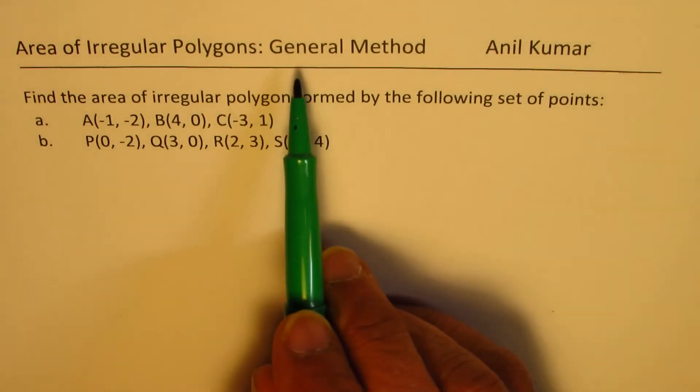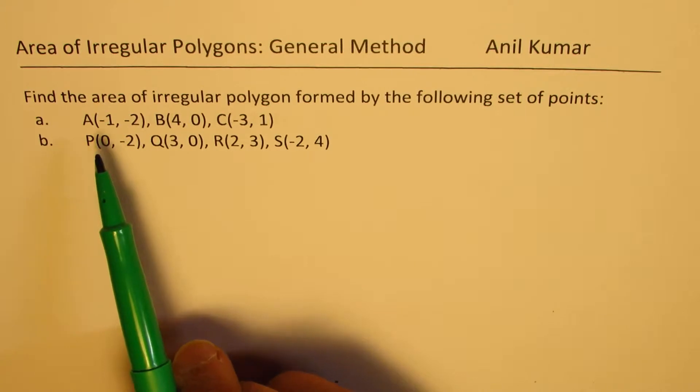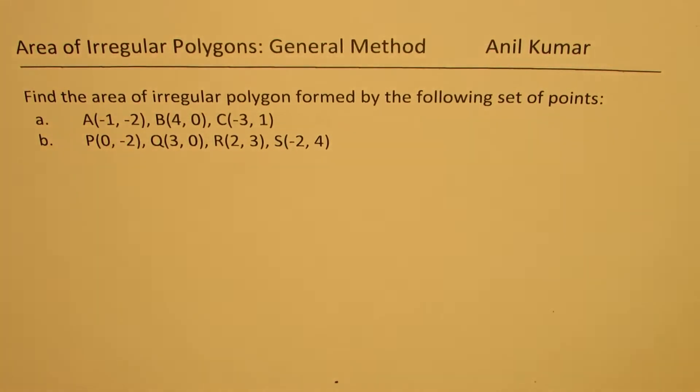I'll provide you with a general method when we are given vertices of the polygon. Now here, we do not have right angles as we had in simpler examples done earlier.